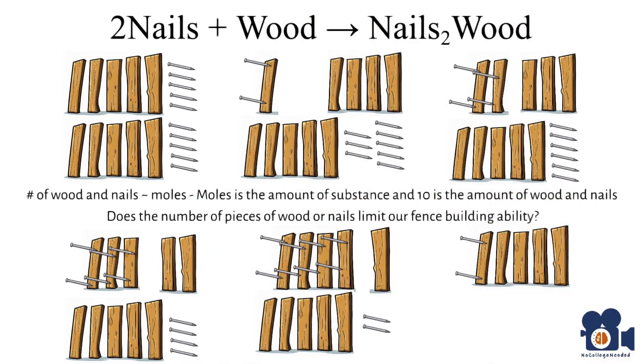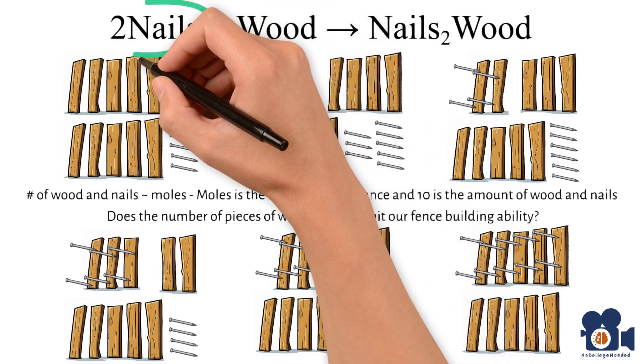Fifth is five pieces of wood and zero nails left. We can no longer build any more fences due to having no more nails left. Therefore, the nails would be the limiting reagent for us.